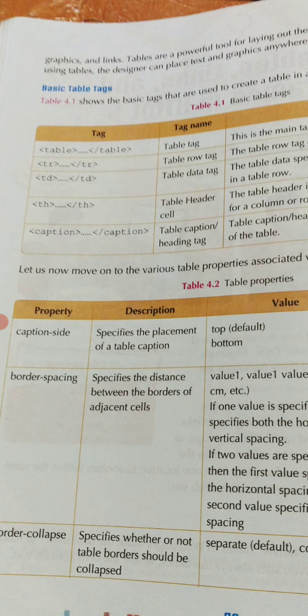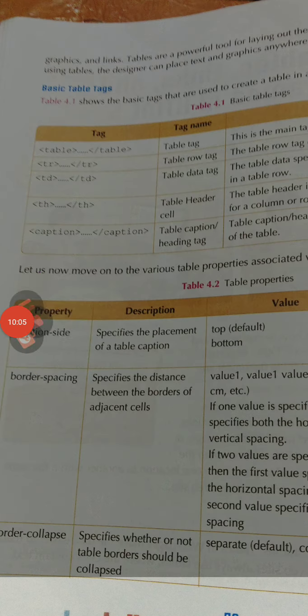The five table tags are: first, the table tag; second, TR — table row tag; third, TD — table data tag; fourth, TH — table header tag; and fifth, caption — table caption or heading tag.